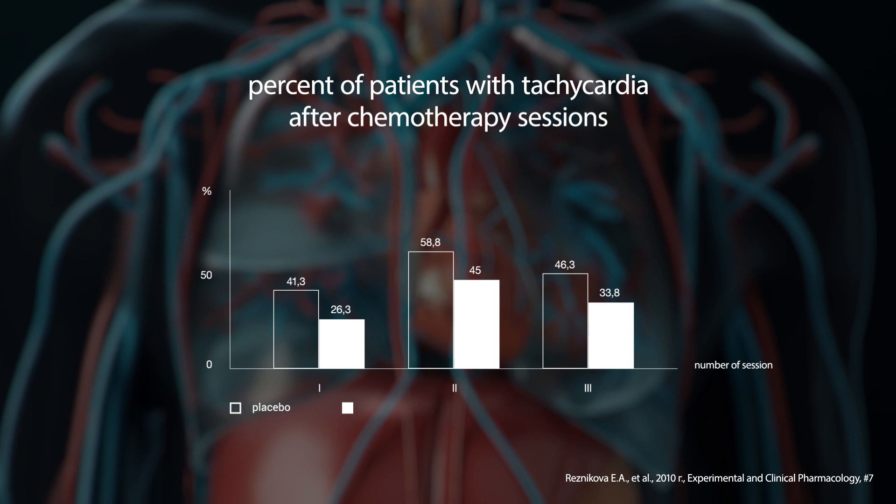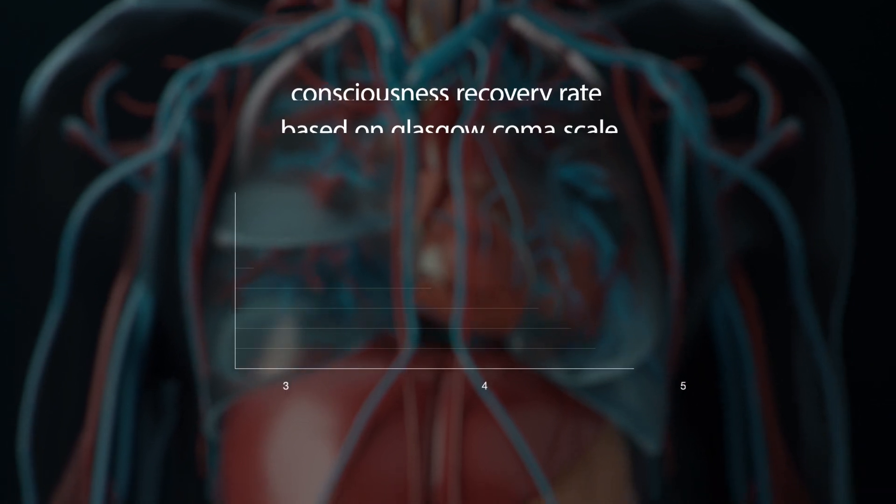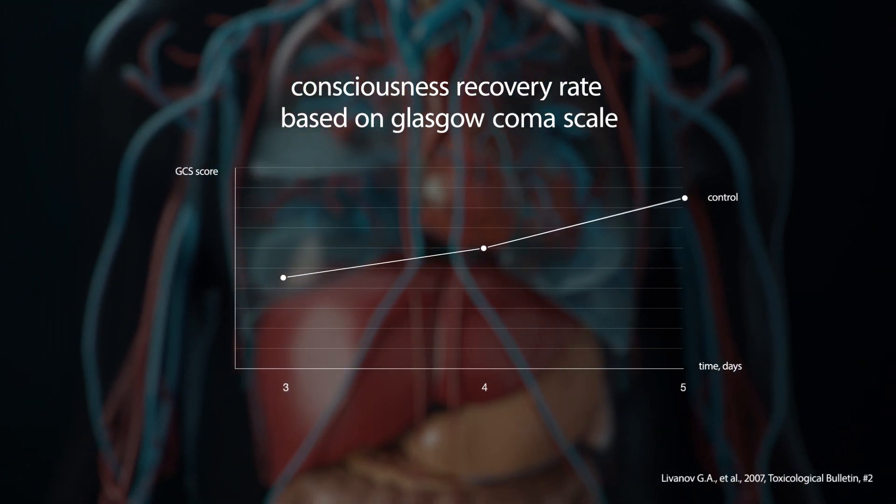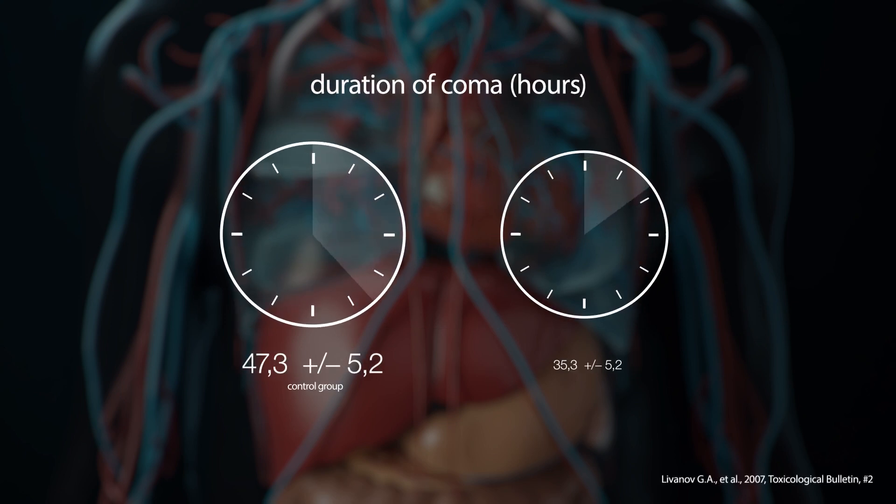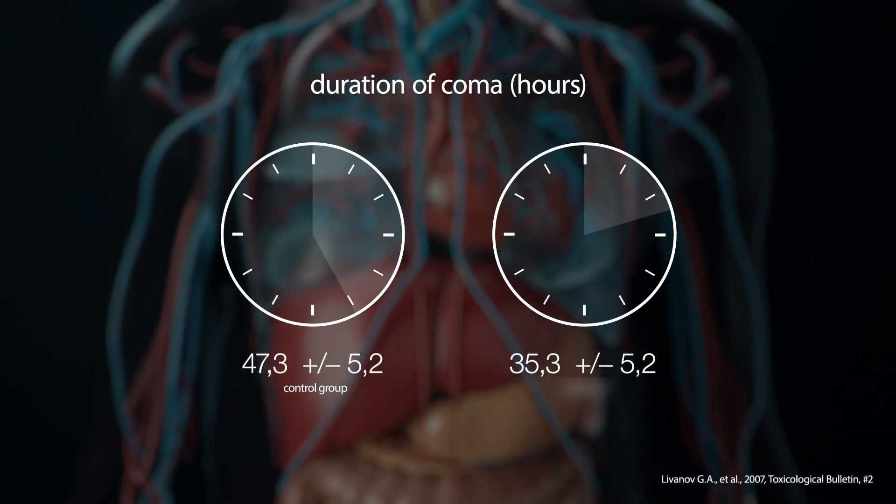Reamblin has notable detoxification properties. It reduces the cardiotoxicity of several chemotherapy regimes. It is effective in reversing cerebral failure induced by neuro-, hepato- or nephrotropic poisons. The drug shortens the duration of coma in coma patients.